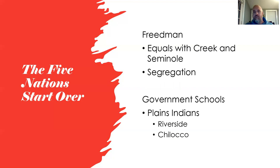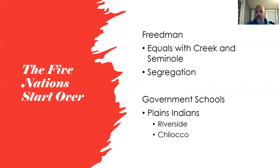One issue was how the tribes treated freedmen — former slaves now free in Indian territory. The two tribes that considered freedmen as equals were the Creek and the Seminole — there was no segregation, and blacks were seen as equals and could achieve equal status. The other three tribes had some disagreement over what should be done with black Americans living there.